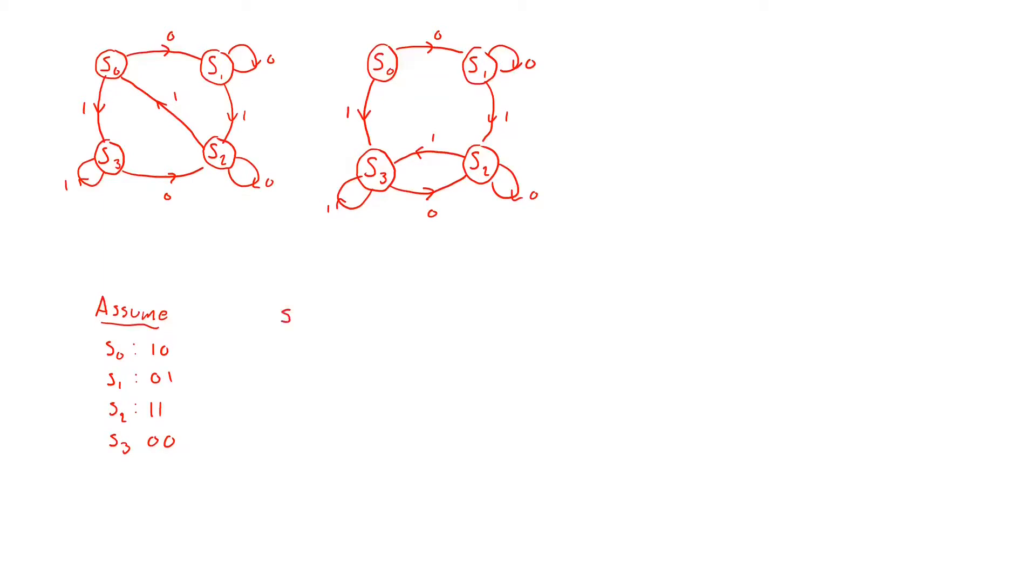Assume now that we are in the state S3 and we get a 0 as an input. That means that we go from state S3 to the state S2 which also means that we go from S3 encoded as 0 0 to S2 encoded as 1 1. And we denote this Q1, Q2 and similarly here we have Q1 and Q2.